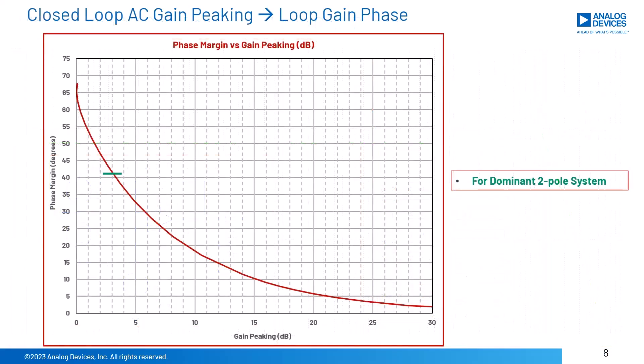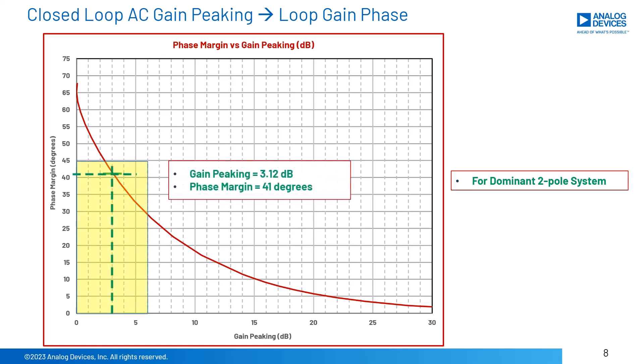Here is the handy phase margin versus gain peaking plot for a dominant two-pole system. From our previous example, we saw gain peaking equals 3.12 dB, which we read off the plot as 41 degrees of phase margin.